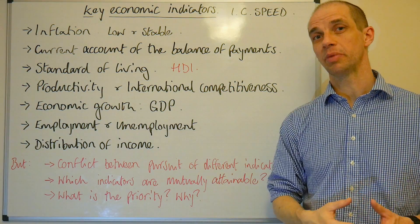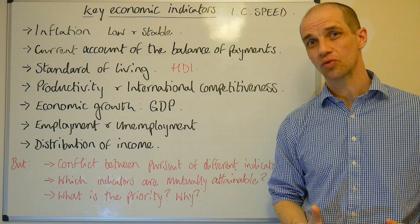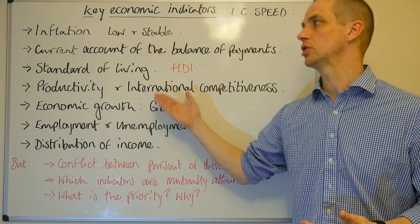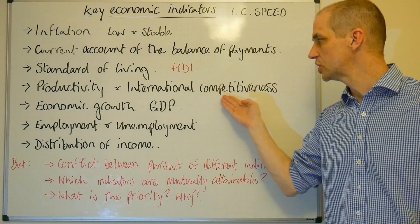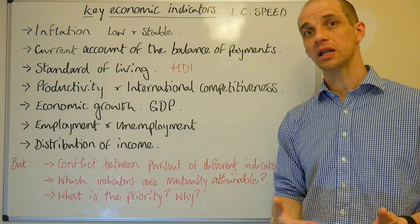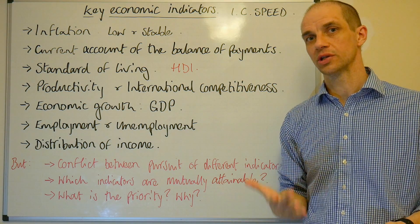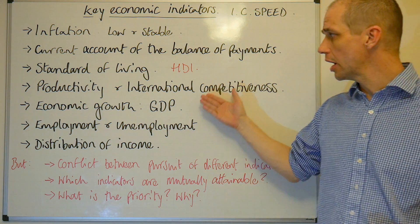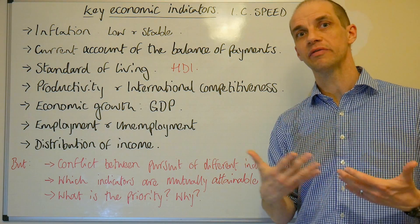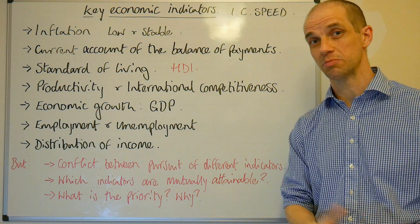Next up, productivity and international competitiveness. You want productivity to be increasing to facilitate so-called cutting-edge growth for MEDCs — those highly developed economies like the US, UK, and European countries. Further to this, you want to have a good level of international competitiveness amongst your exports. You want them to be priced fairly according to your exchange rate, which you want to be fairly stable and consistent, as that helps to improve business and consumer confidence. You also want exports to be quite sophisticated, with very differentiated aspects so that consumers have a real incentive to buy those products.